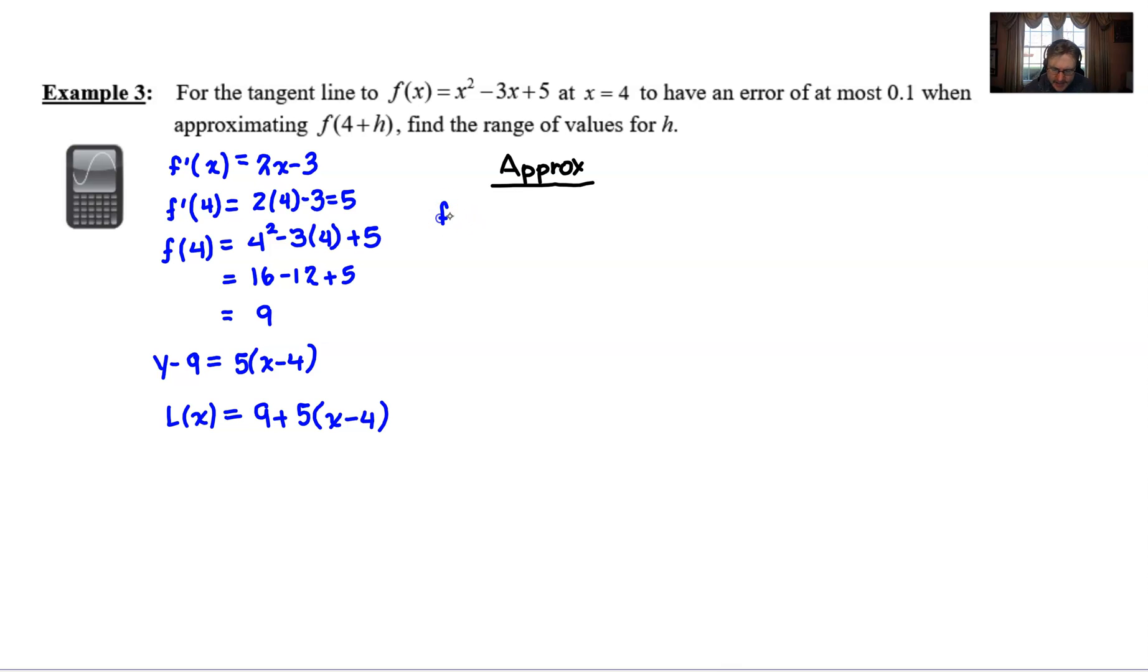And I will take my f(4 + h) and proclaim that that is approximately equal to L(4 + h), which of course would give me 9 + 5 times the quantity 4 + h - 4. Now we can't reduce that to some numerical quantity, so we have to deal with the variable that's present and just simplify as best we can.